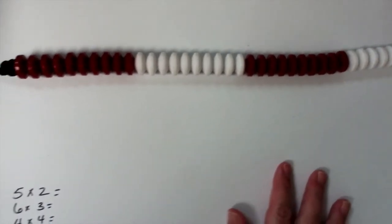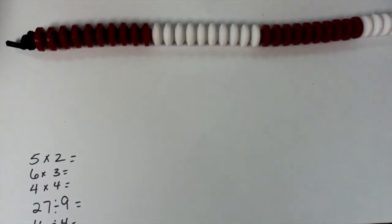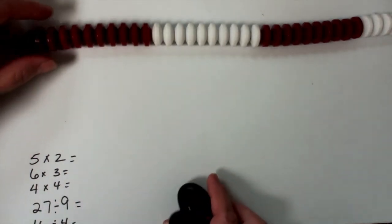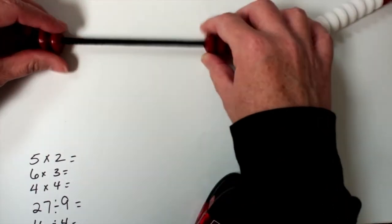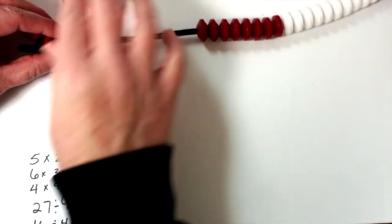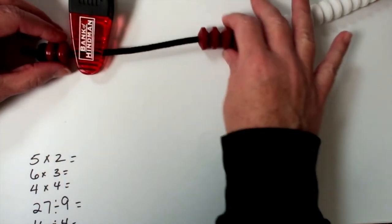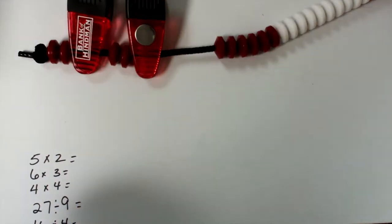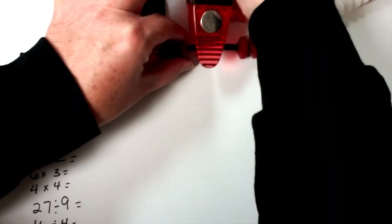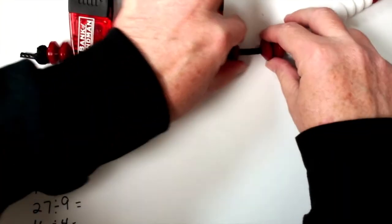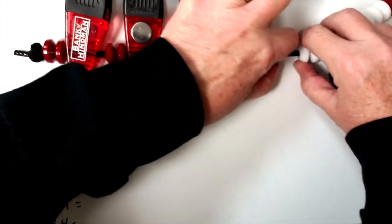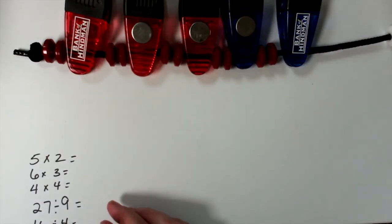Let's talk about multiplication and division. If I'm using my bead string for multiplication, we've got a problem: five groups of two. Here's one group of two — I like using some kind of clip to separate those out. That's important, just to separate them. So that's one group of two, two groups of two, three groups of two, four groups of two, and five groups of two.